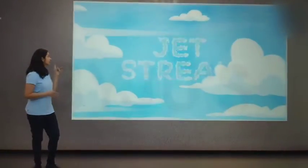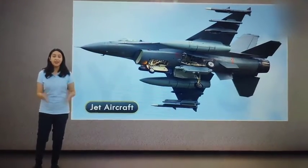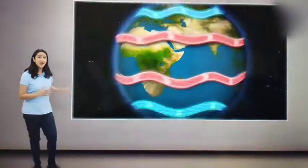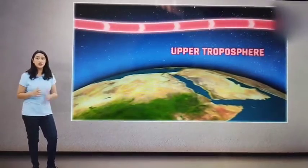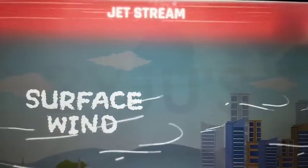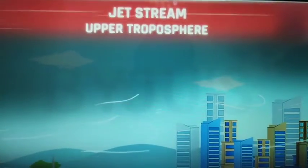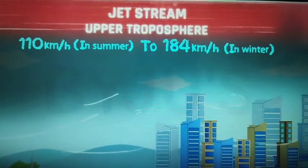One of those factors is the jet stream. I am sure you must have heard about jets — they are known for their speed. Jet streams are something like that. These are high velocity winds that blow in the upper troposphere at an altitude of around 12,000 meters. These winds are faster than surface winds as there are no obstacles in the upper troposphere. The speed can vary from 110 to 184 kilometers per hour.